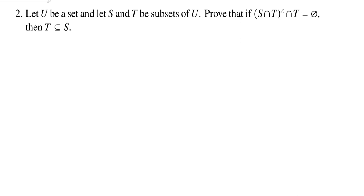This is Math 302. And in this problem, let's see, we're given a set U and two subsets, S and T. And we want to prove that, oh my goodness, this is complicated.